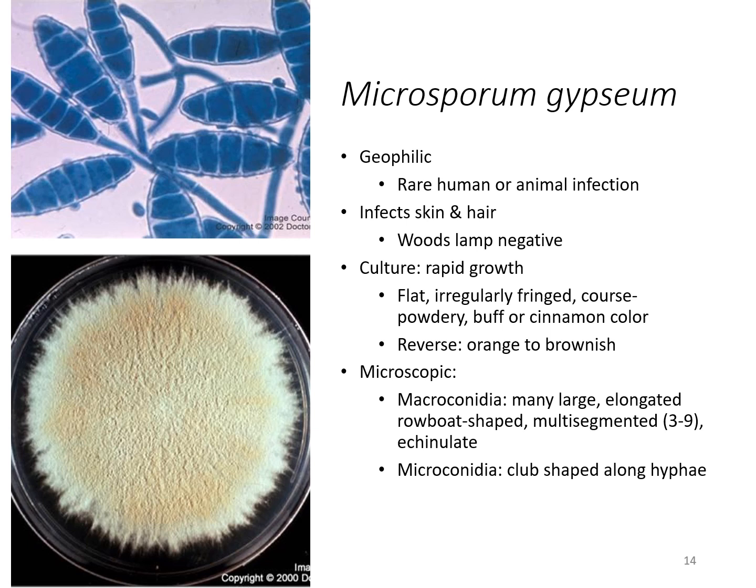Microsporium gypseum is transferred from the environment — the soil — to the human. It is rare human or animal transmission. It infects the skin and hair, and if you were to use the Woods lamp on this species, it would be negative. Culture shows very rapid growth — it's flat with irregular fringes around the outside edge. It can be coarse to powdery, buff or cinnamon in color.